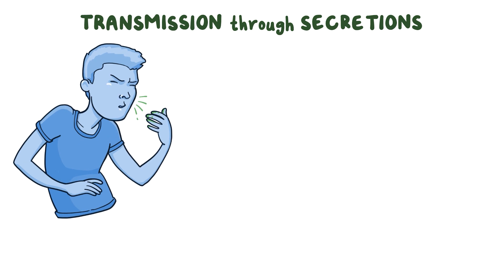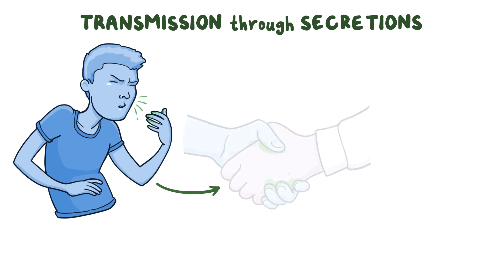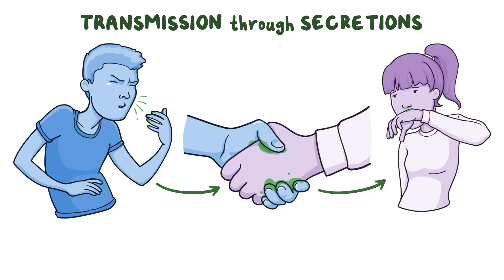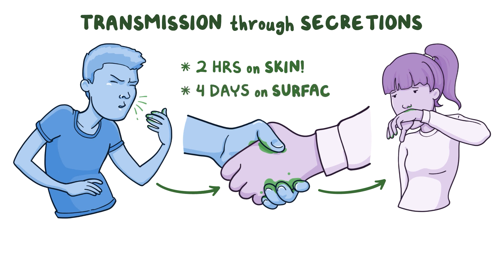Rhinovirus transmission occurs through contact with infected respiratory secretions, like snot and aerosols, particularly from nose blowing or sneezing. Touching an infected surface, like a door handle or shaking hands, and then touching an uninfected respiratory mucosa is a main way to transfer an infection. Rhinoviruses can survive up to two hours on the skin and four days on surfaces.